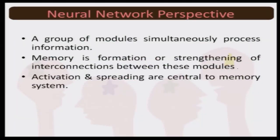The third perspective on memory is the neural network perspective. Neural network theory talks about groups of modules — various modules which form a group and help perform simultaneous functions. Memory, according to the neural network perspective, is the formation or strengthening of interconnections formed between different modules. Activation and spreading learning are the two central components from the neural network perspective related to memory.